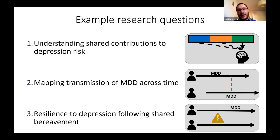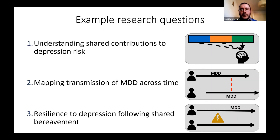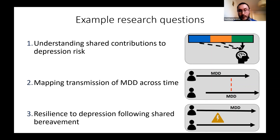Bringing it back to the research questions we were interested in, there are a number of questions this data resource can address, and we started with three. First, understanding the different sources of risk, particularly for depression. Second, looking more closely at the timing at which depression can be transmitted between individuals within a family. Third, trying to pin down what drives resilience within a family — where one family member might be affected by a particular event whereas other members may not be. These are all questions we're hoping to address over the coming months.